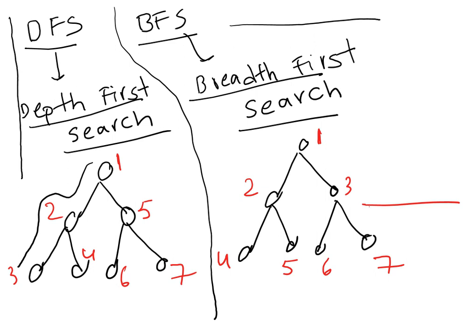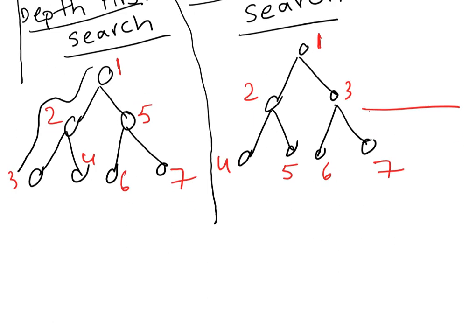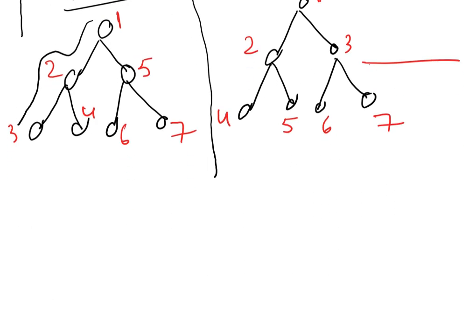Once again: depth first search means vertical. I'm searching: first one, two, three going down, then four, five, six, seven. In BFS: one, two, three, four, five, six, seven going across. Let me now go through an example — I will draw the trees here.